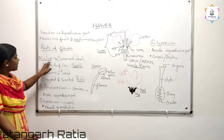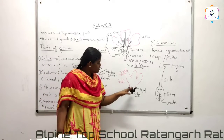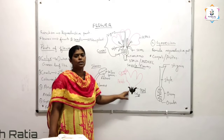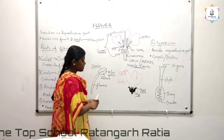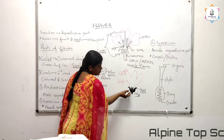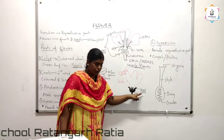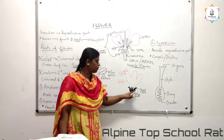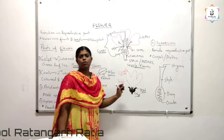Calyx is the outermost whorl of the flower. This cup-like portion at the bottom of the flower we are calling it as calyx. You can see that the calyx is made with single leaf-like structures, and each one is known as a sepal. So many sepals are joining together to form the entire calyx. The single unit of calyx is sepal.